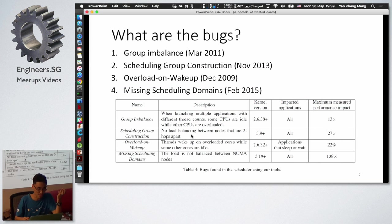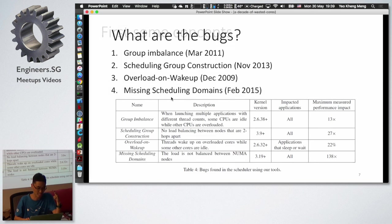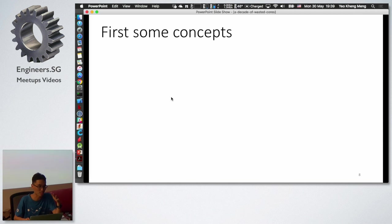There are 4 bugs identified in the paper: group imbalance, scheduling group construction, overload on wakeup, and missing scheduling domains. Before going into these bugs, there are some concepts to cover first.